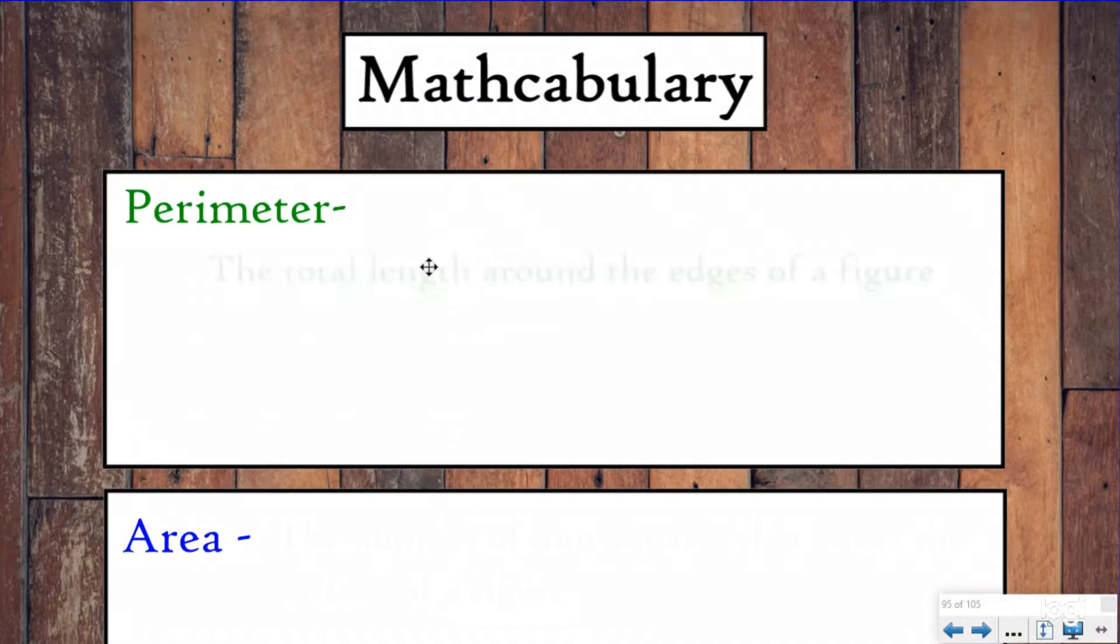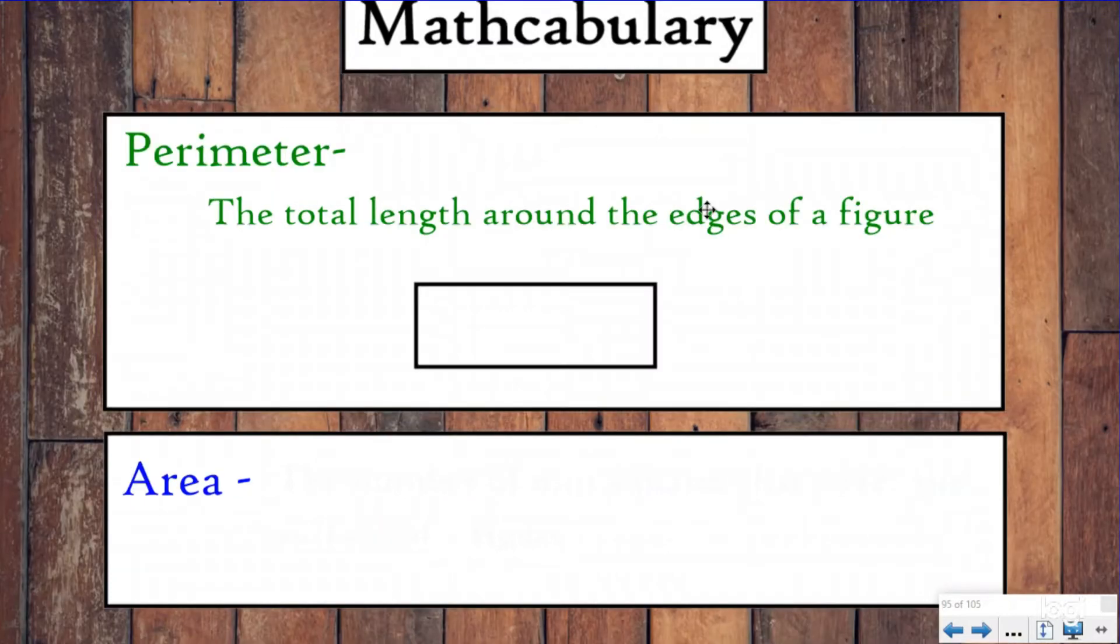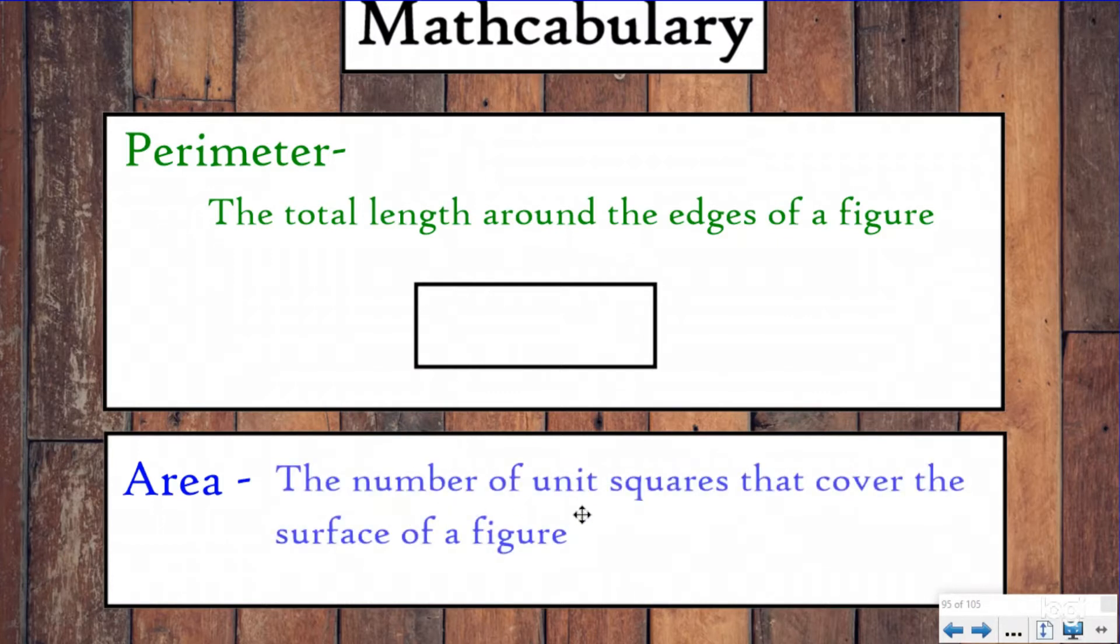Before we start, let's review some vocabulary so we're all on the same page. When we talk about perimeter, we're talking about the total length around the edges of a figure. Whereas area is the number of unit squares that cover the surface of a figure.